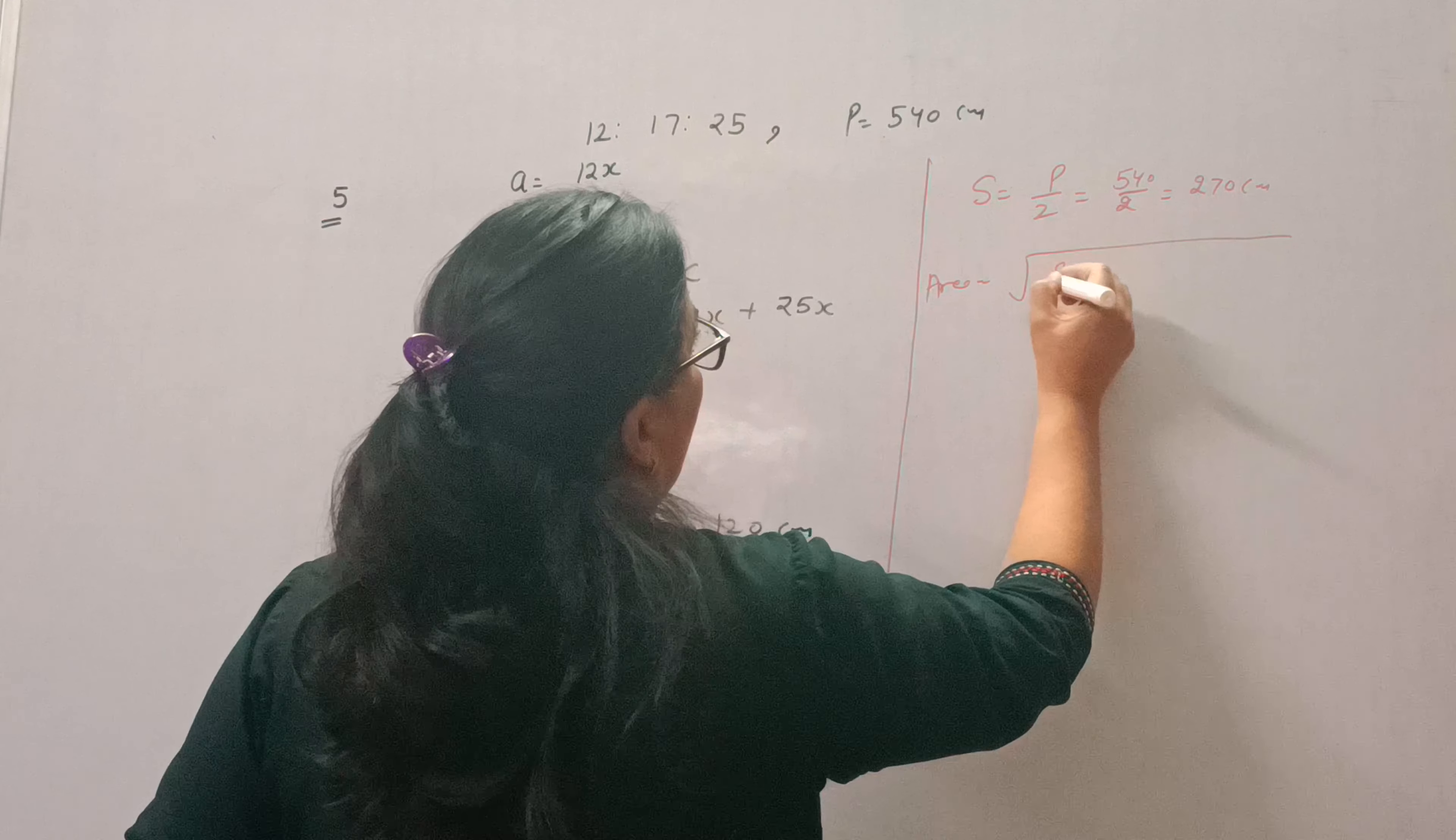So S is 270, 270 minus 120, 270 minus 170, 270 minus 250.